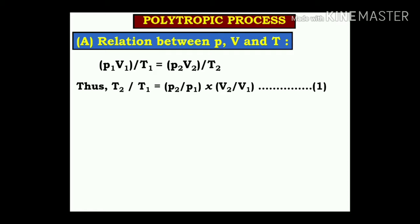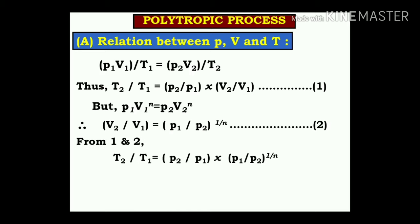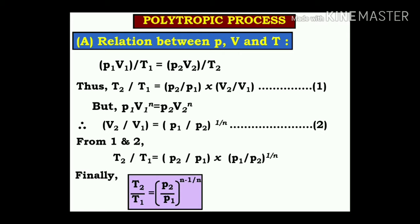For more relations, starting again from P1V1/T1 = P2V2/T2, we get T2/T1 = (P2/P1) × (V2/V1) — equation 1. From the polytropic relation, converting to get V2/V1 = (P1/P2)^(1/n) — equation 2. Substituting into equation 1, we finally get T2/T1 = (P2/P1)^((n−1)/n).